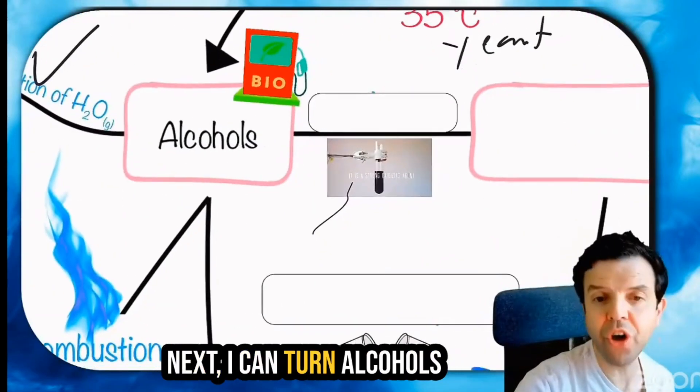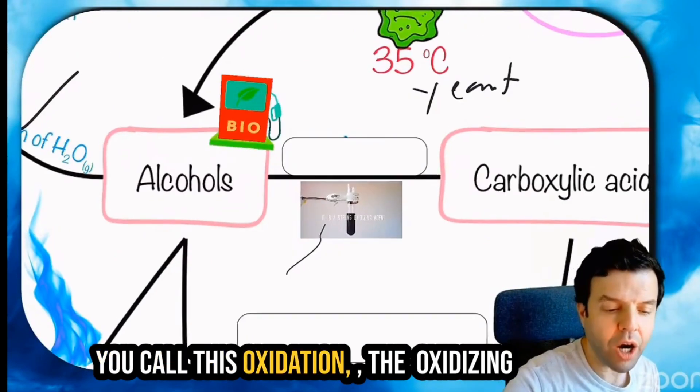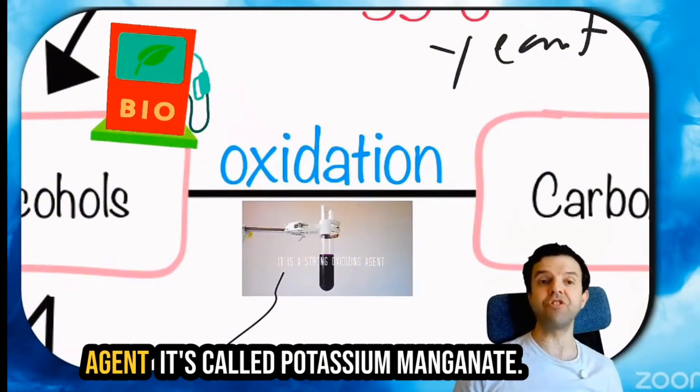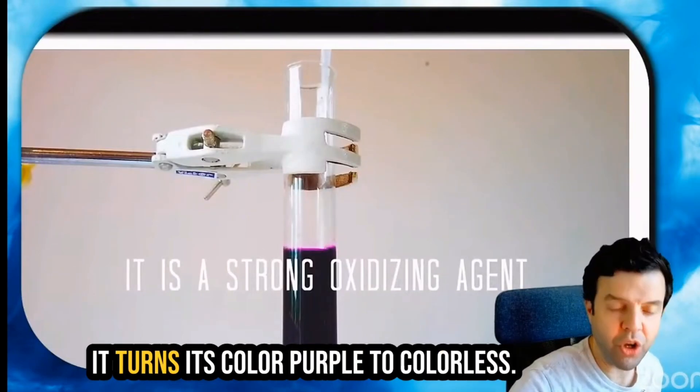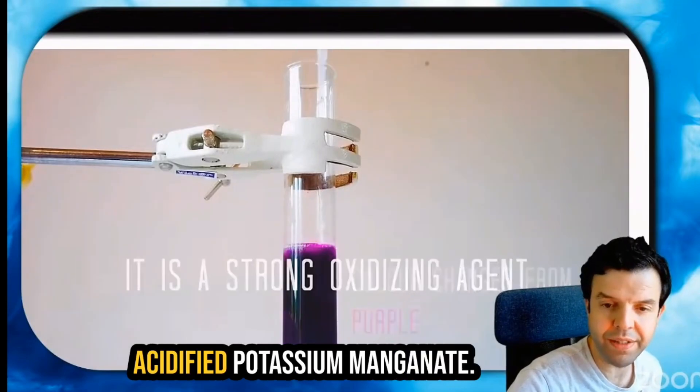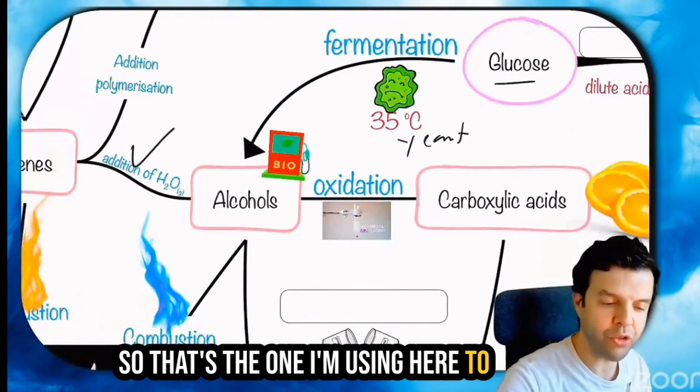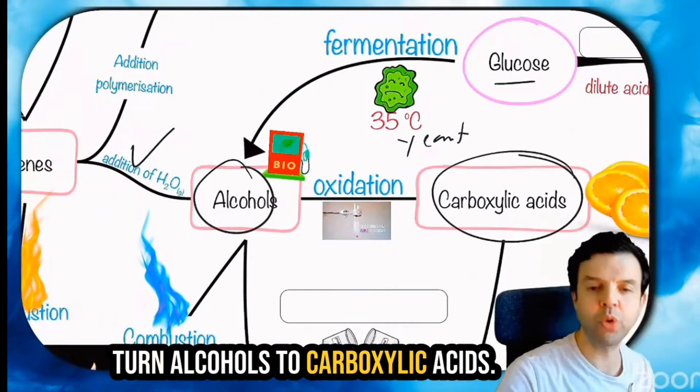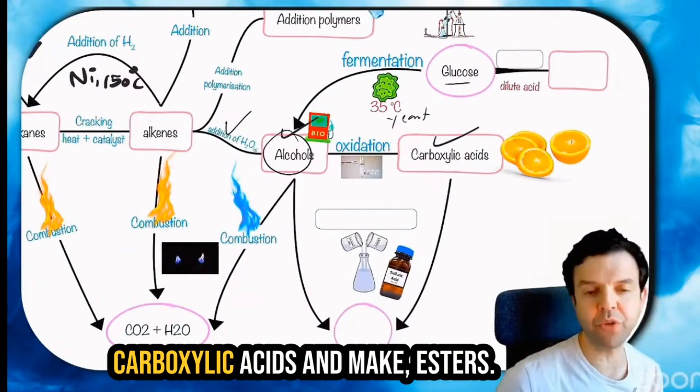Next, I can turn alcohol into carboxylic acid using oxidation. The oxidizing agent is called potassium manganate. It turns its color from purple to colorless when acidified. That's the one I'm using here to turn alcohol to carboxylic acids.